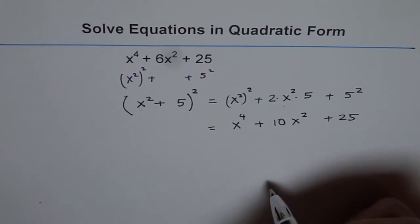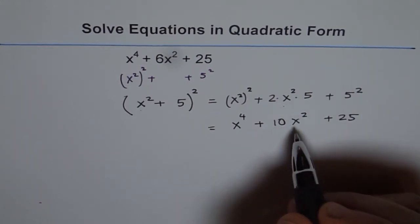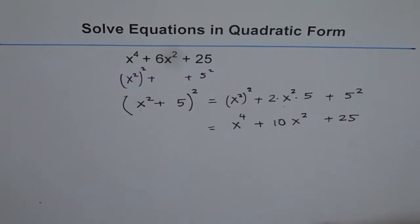Well, so what we can do is, since 4x^2 is missing, we can add and subtract 4x^2, right, in our expression.